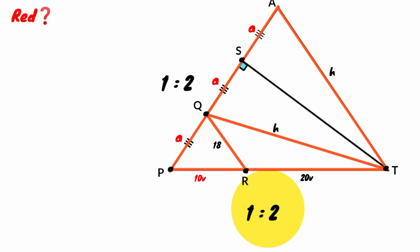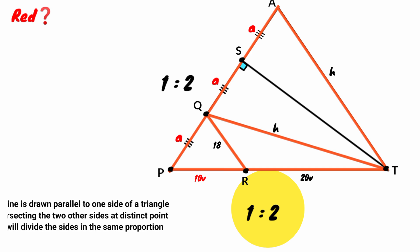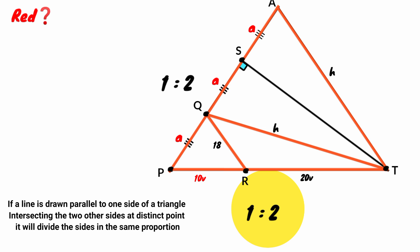Thales' theorem states that if a line is drawn parallel to one side of a triangle intersecting the two other sides at distinct points, it will divide the sides in the same proportion. So since this line divides the two sides of triangle APT in the same proportion, by Thales' theorem it is parallel to the third side.